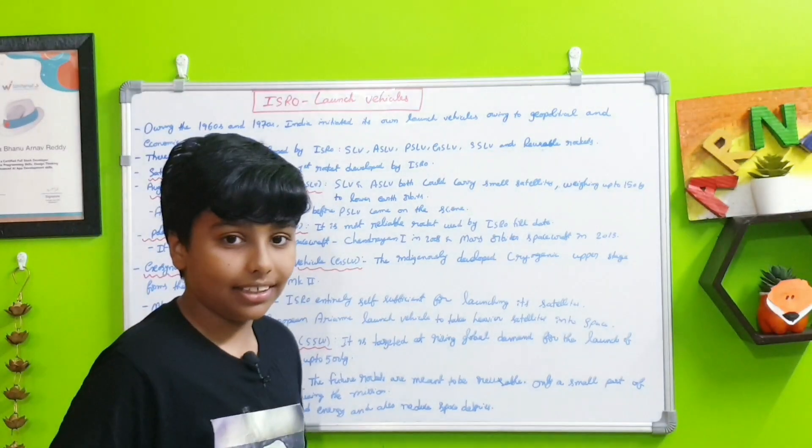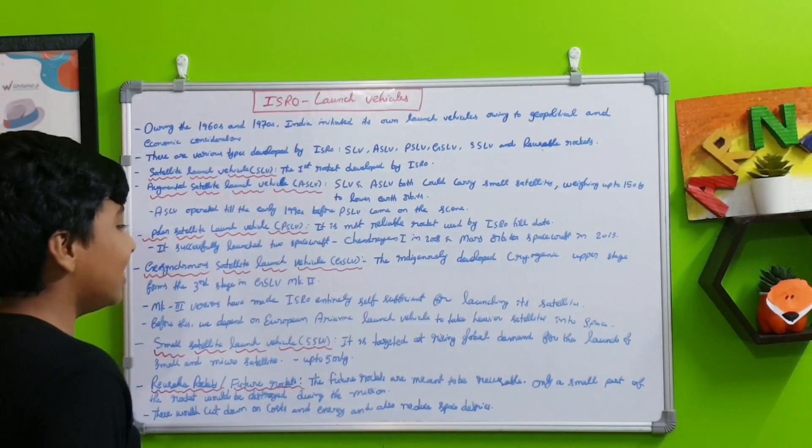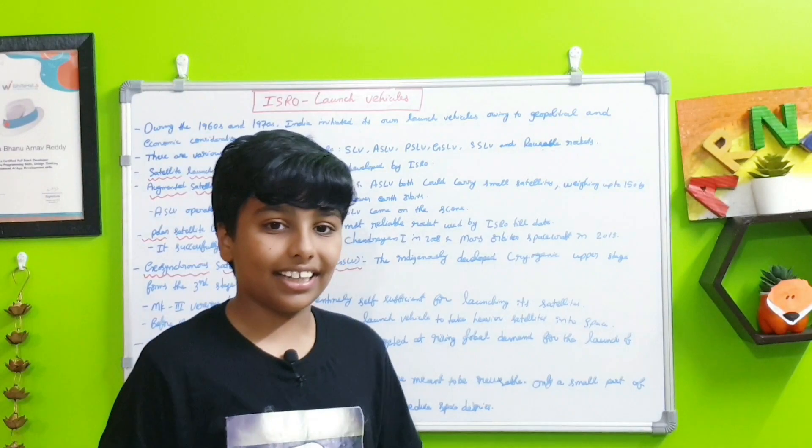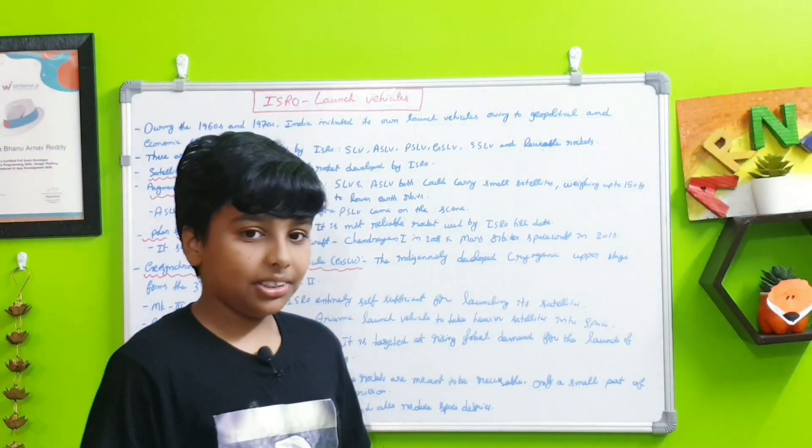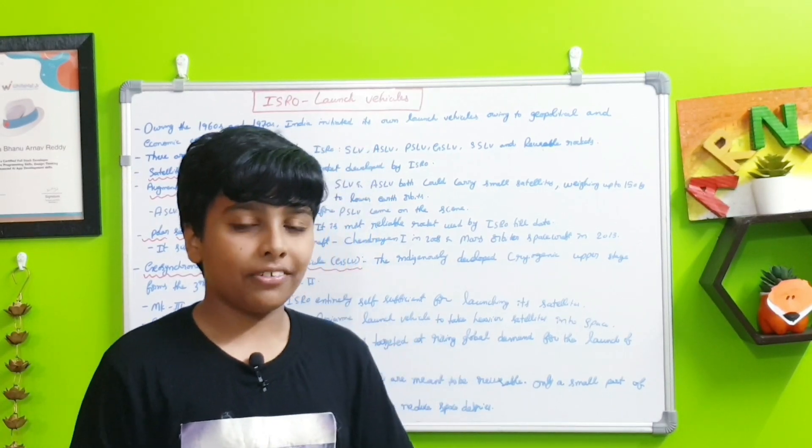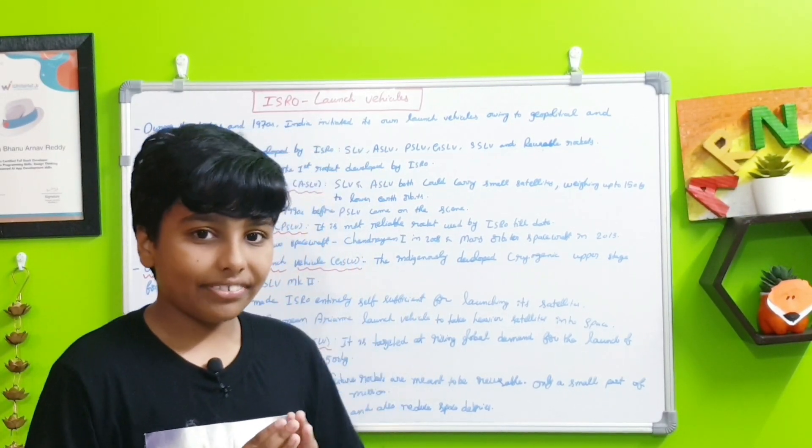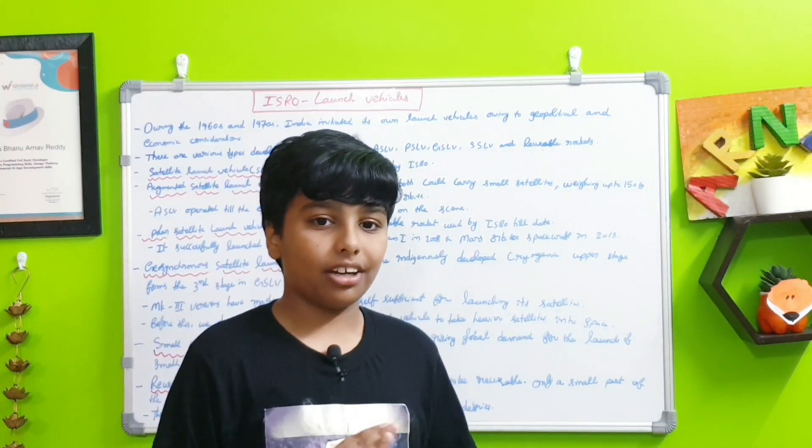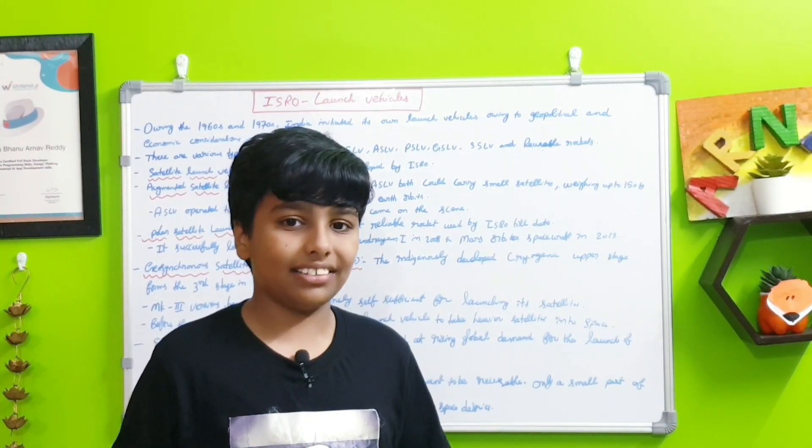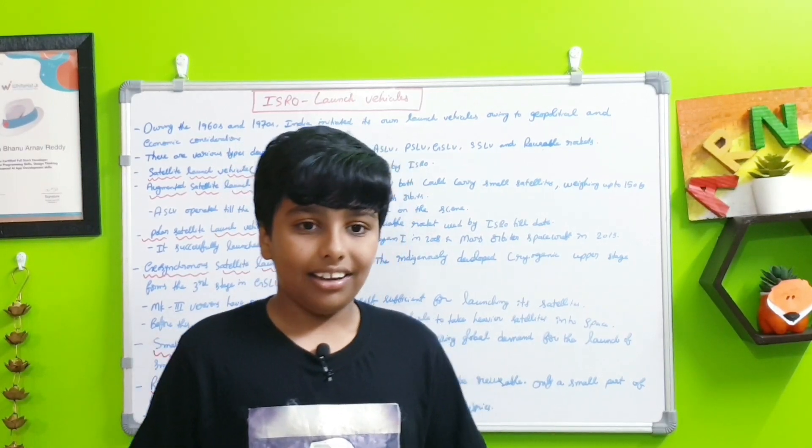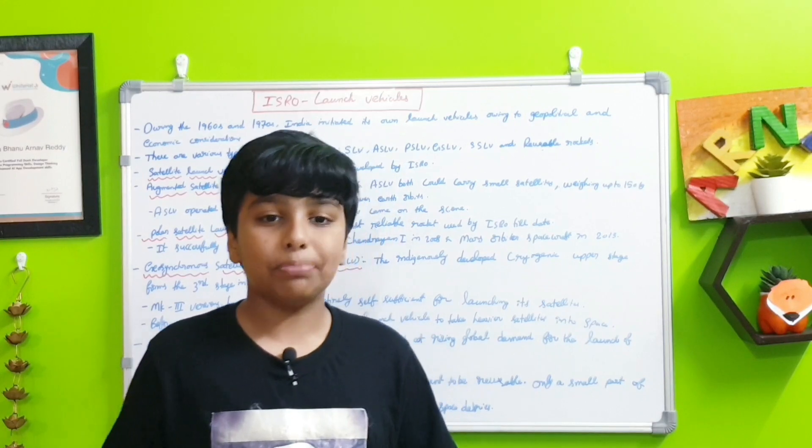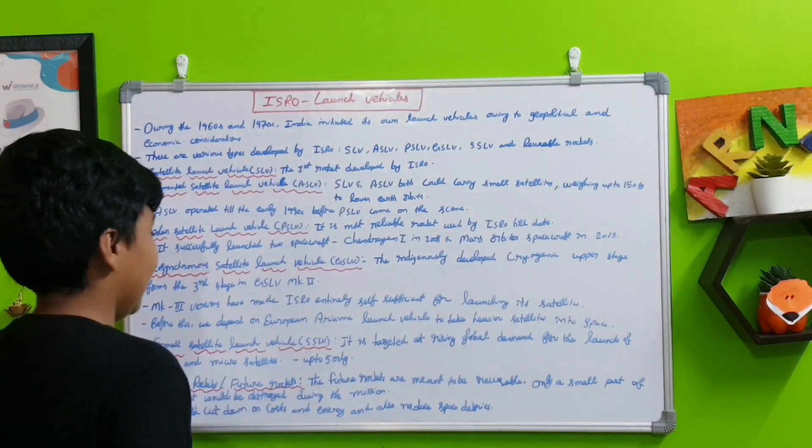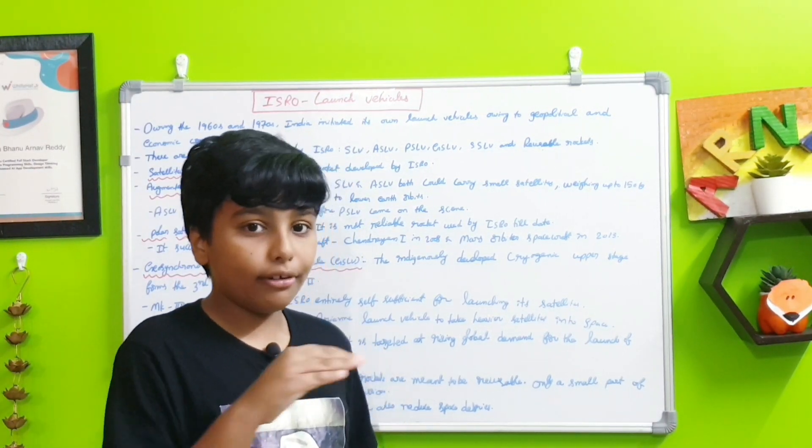Next, the Small Satellite Launch Vehicle or SSLV. It started due to rising global demand for the launch of small and microsatellites. It can carry up to 500 kg. This small satellite launch vehicle is of course small in size. Normally if we use PSLV or GSLV to send lower orbit satellites, we will waste lots of fuel and it's very expensive. That's why India created the SSLV.